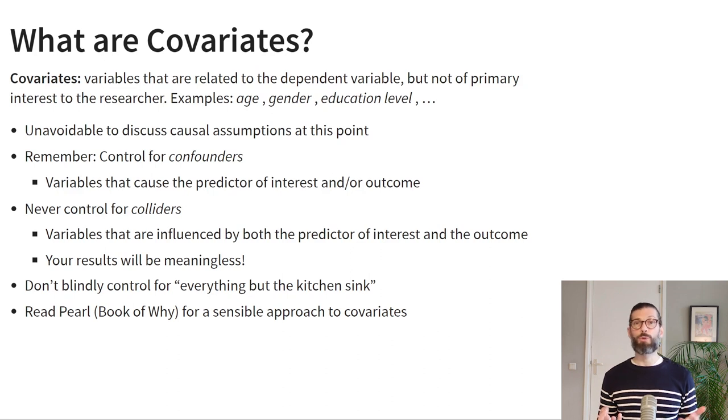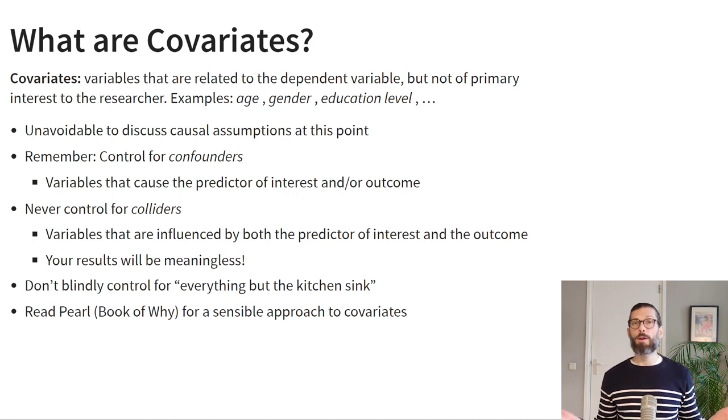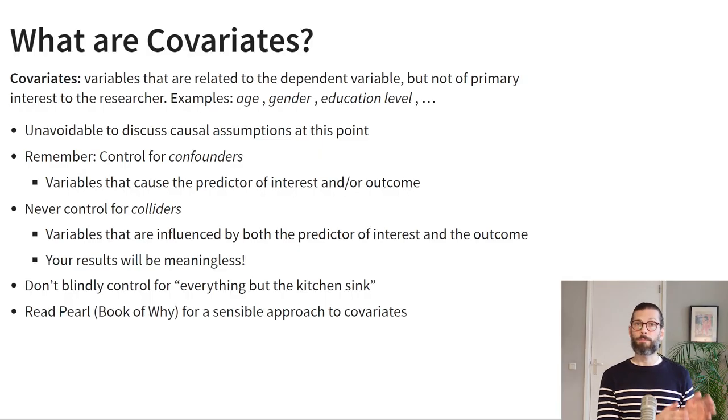In order to make the distinction between a control variable and a predictor that is of theoretical interest, it is unavoidable to discuss causality. If you think back to the lecture where I gave a short primer on causality, you may remember that it's really useful to control for confounders but you should never control for colliders. So when we determine which variables should be included as controls, it's really important to get this distinction right.